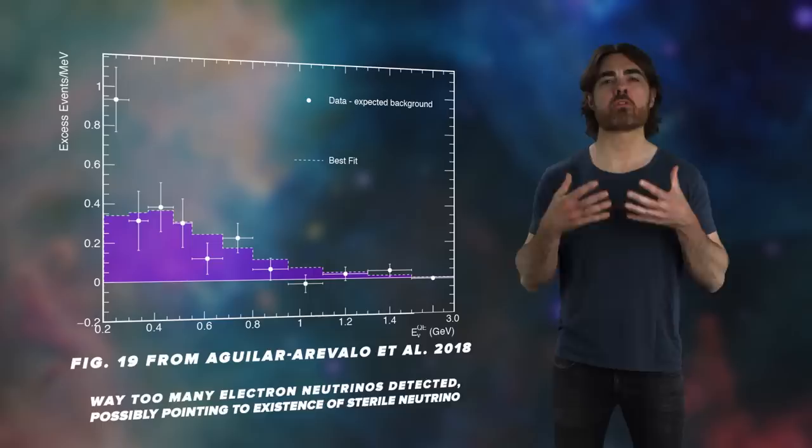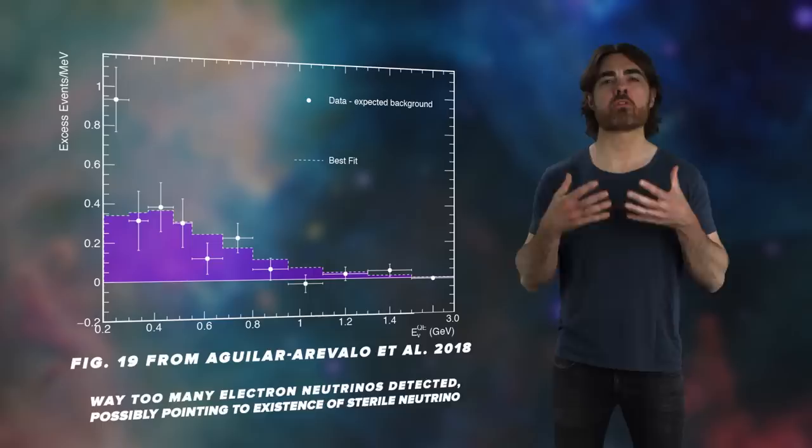The team finds an overabundance in electron neutrinos at the 4.8 sigma level. Now that's actually slightly below the critical 5 sigma level required for claiming a high confidence detection. However,